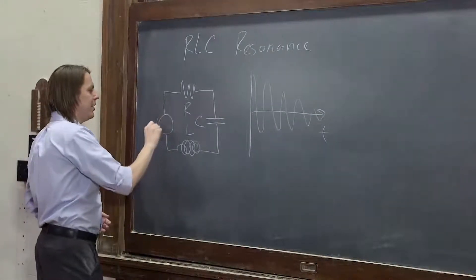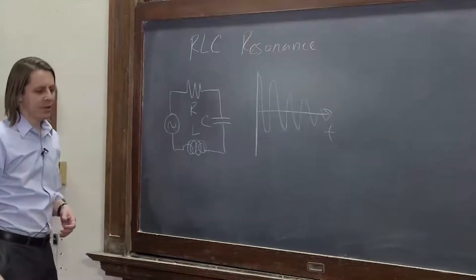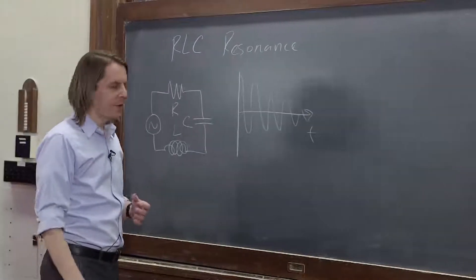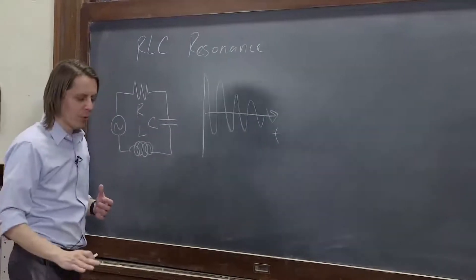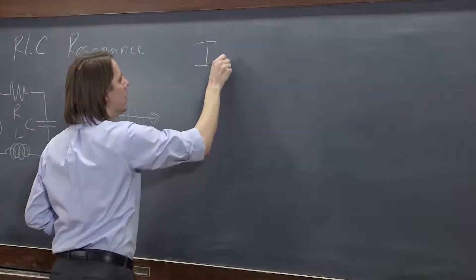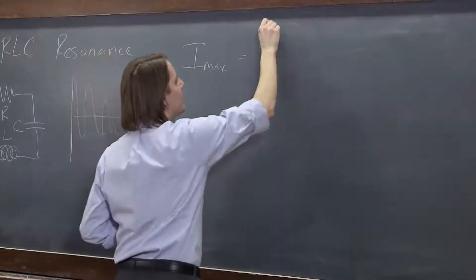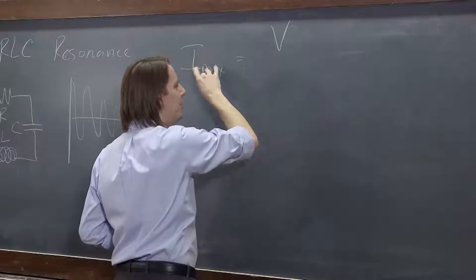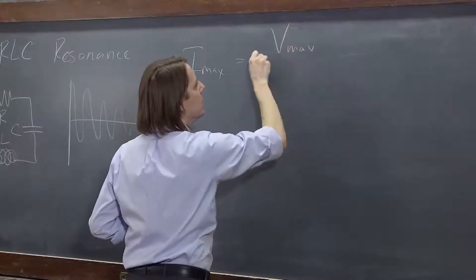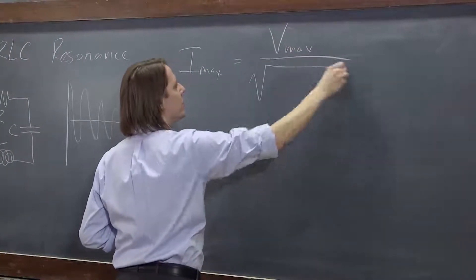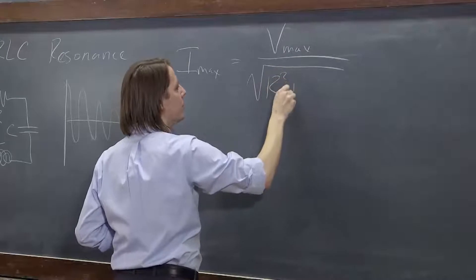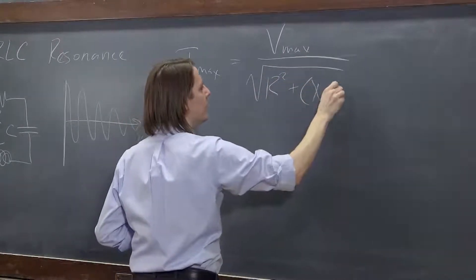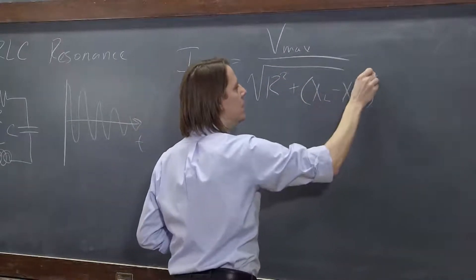Now if we drive it, the differential equations lead to something kind of similar. It does have a frequency where it really wants to oscillate. So if we go back and look, Imax, the maximum or the amplitude of the current oscillation, was Vmax over the impedance, the square root of R squared plus XL minus XC squared.